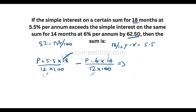5.5 multiplied by 3 is 15, and 16.5. Then 16.5 divided by 2 is 200, divided by 200, minus 7, divided by 100.